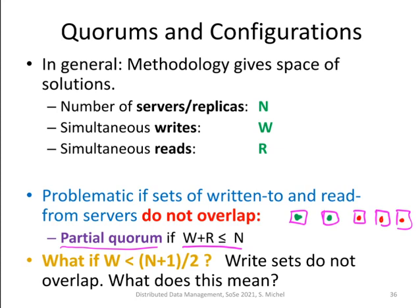On the other hand, if W plus R is strictly larger than N, then the read and write sets are guaranteed to overlap. We can also look at the parameter W alone: if W is strictly smaller than (N plus 1) divided by 2, then the write sets do not overlap — and you can think about what this means for a system if the write sets of multiple writes by the same or different clients do not overlap.